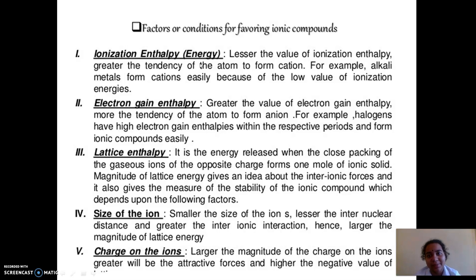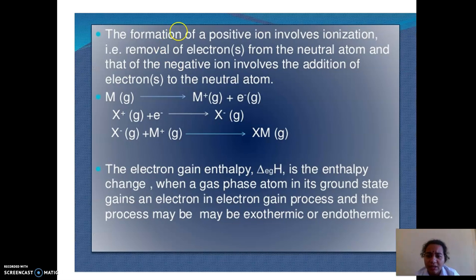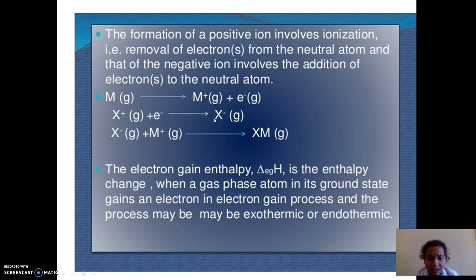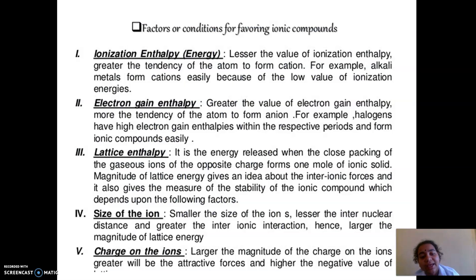Elements should have high electron gain enthalpy to form an ionic bond. For example, halogens have high electron gain enthalpy — in order to attain the octet in the valence shell, they require one more electron. Halogens will form a negative ion. So if an element has high electron gain enthalpy, it will favor ionic bond formation. The second condition is high electron gain enthalpy.